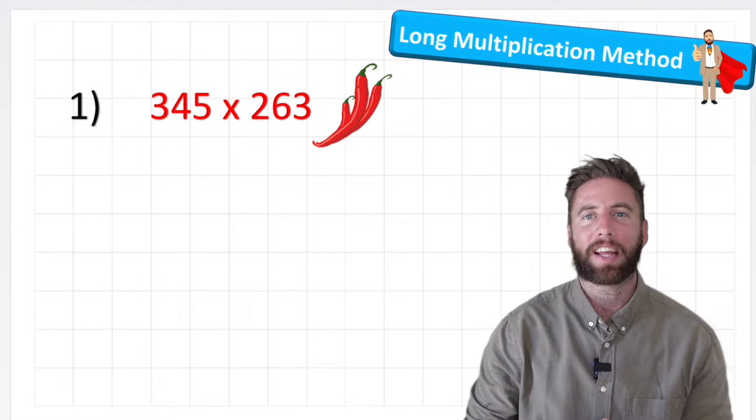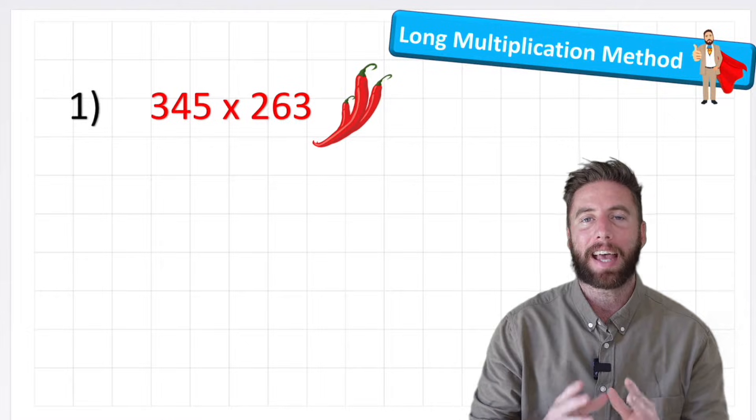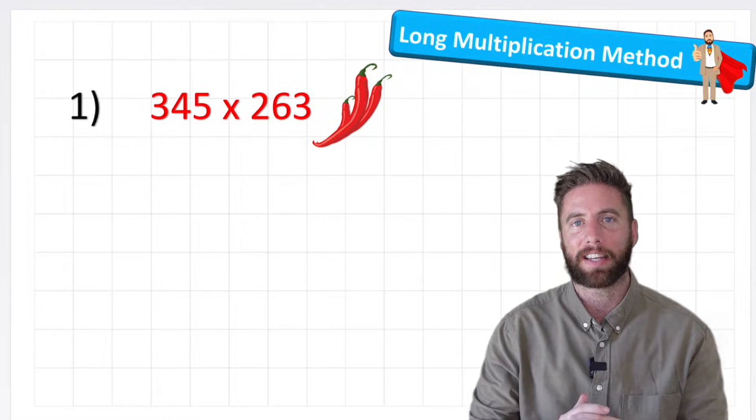What is up everybody? Today we are looking at multiplying a three-digit number by another three-digit number, and this is probably as hard as multiplication can get without getting into decimal numbers.